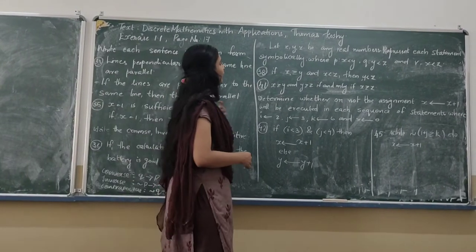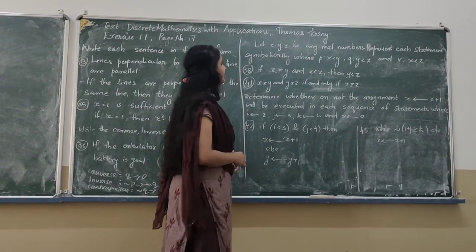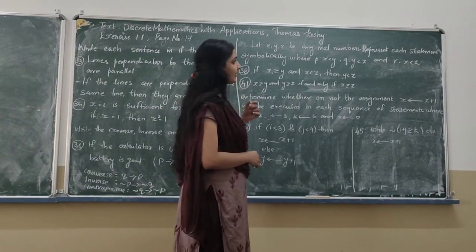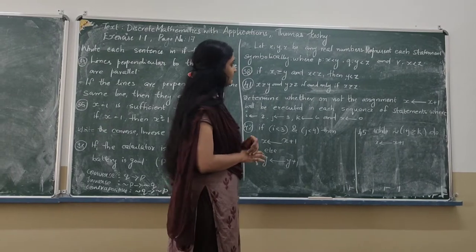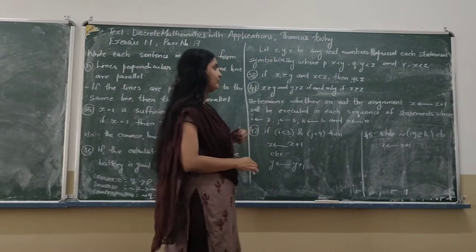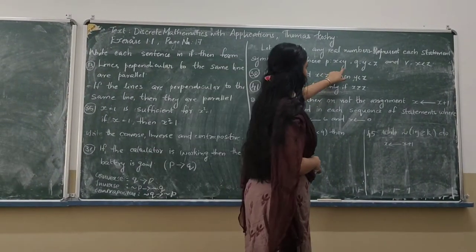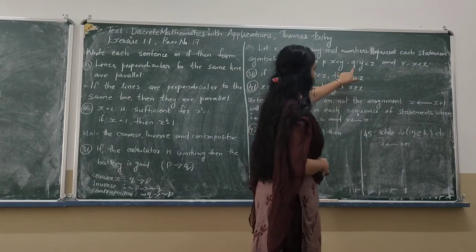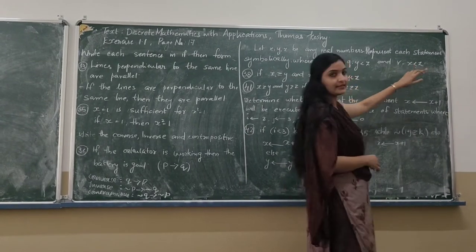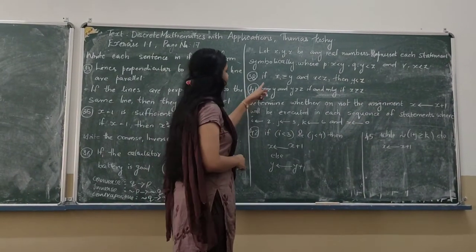Now we move on to the 38th question. Given X, Y and Z are real numbers and we need to represent each statement symbolically. P is the proposition X greater than Y, Q is Y greater than Z, and R is X greater than Z.